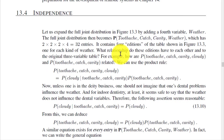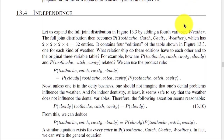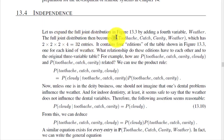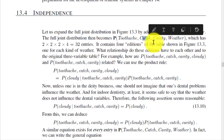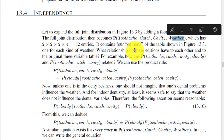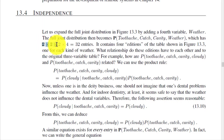The next point is independence. We expand the full joint distribution by adding a fourth variable — weather. The full joint distribution then becomes P(toothache, catch, cavity, weather), which has 2×2×2×4 = 32 entries.